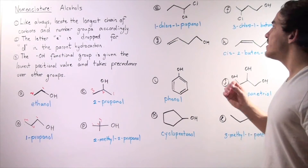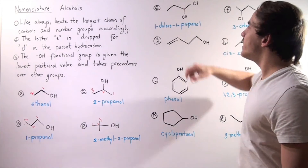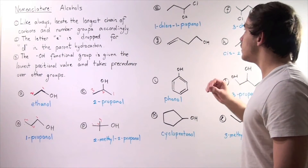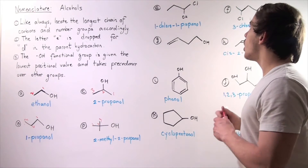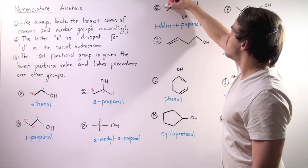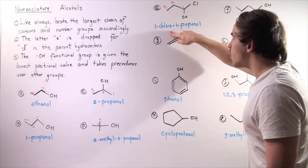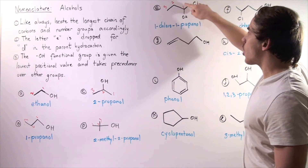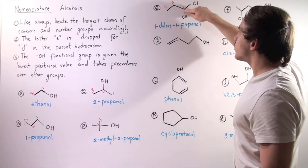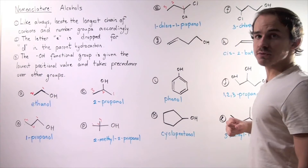Example E: where do we begin? If we begin on this end, we have high values for these groups. If we begin on this end, we have a low value. So let's begin on this carbon: one, two, three. We name this 1-chloro because we have a chloride on the first carbon, 1-propanol because we have a three-carbon chain, and our hydroxy is on the first position.